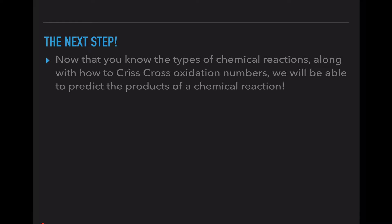So here's the next step. We know the five types of chemical reactions along with how we crisscross our oxidation numbers to get the subscripts of the new chemical compounds. We're now going to use these two things together to help us predict the ending of a chemical reaction.